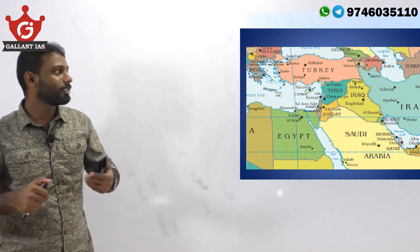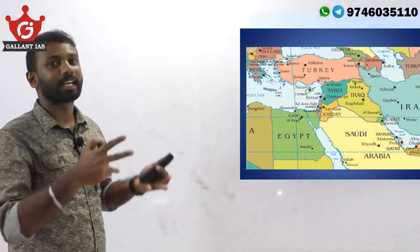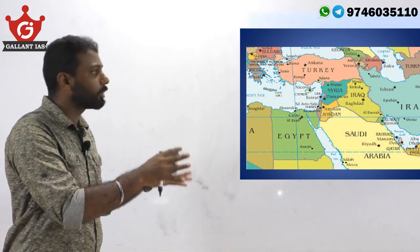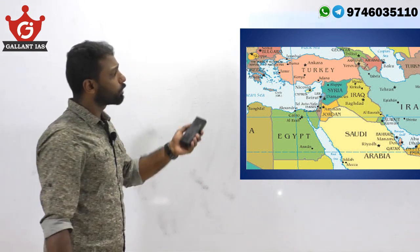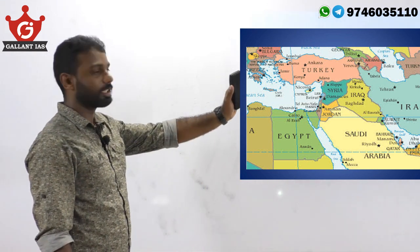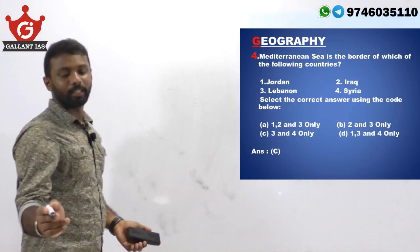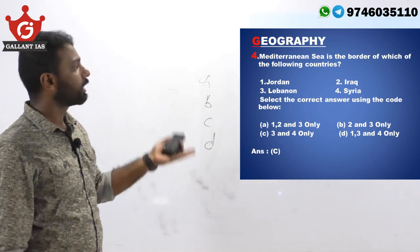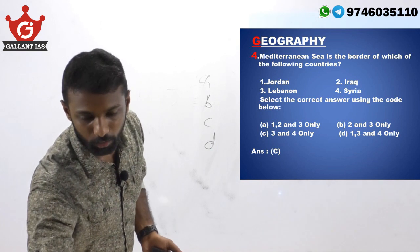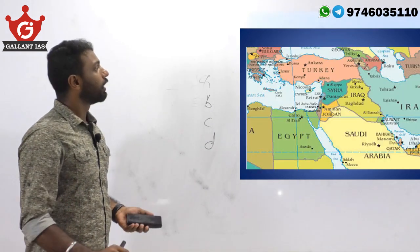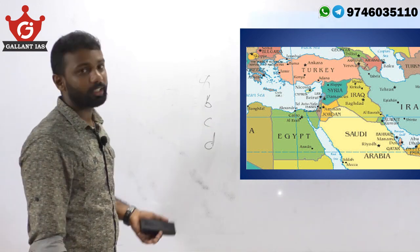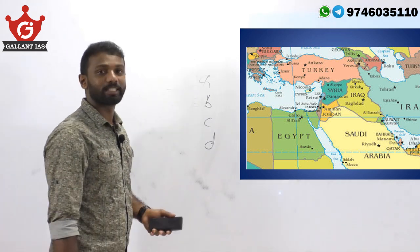UPSC has a tendency to ask map-based questions, mainly because these regions are prominent in current affairs. Syria is one of the most prominent regions currently, and so is the Mediterranean region. Looking at the border areas, Iraq is a little bit inside and does not border the Mediterranean Sea, so Iraq won't be in the answer. We can eliminate options A and B. It is clear that Lebanon and Syria are the only countries in this question which share a border with the Mediterranean Sea.